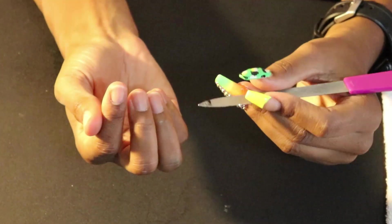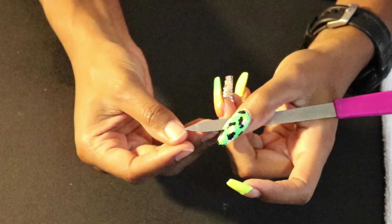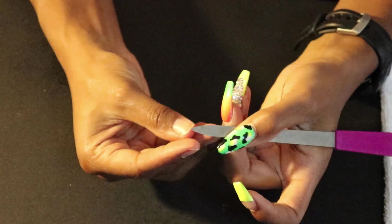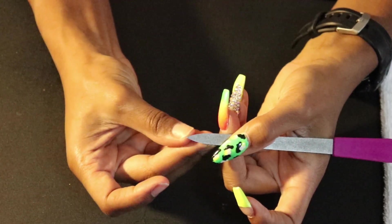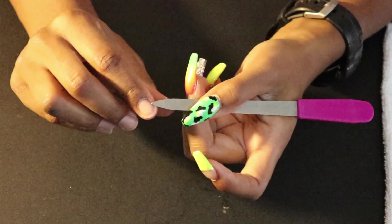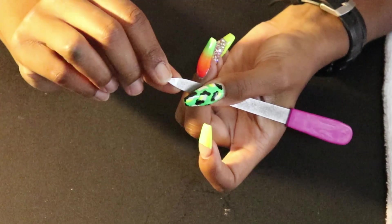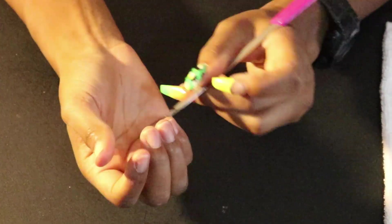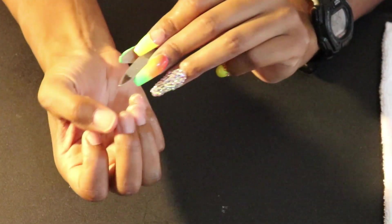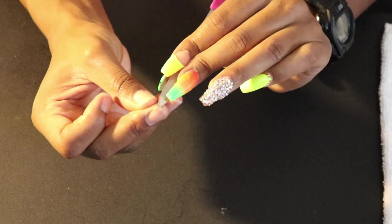First, I'm just going to take this metal nail file to clean up underneath the nails. My hands are actually really clean, but just to be on the safe side, I'm going to make sure there's no dirt left underneath the fingernail that will show through since I'm using clear acrylic.